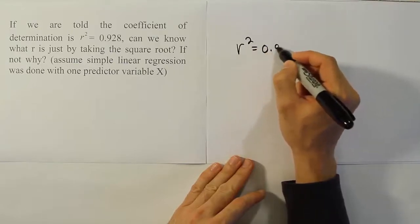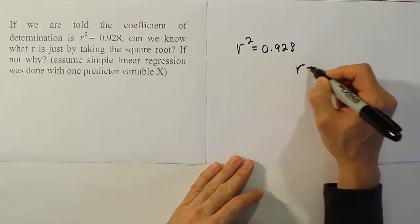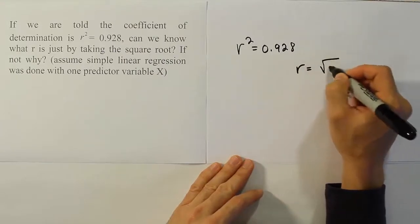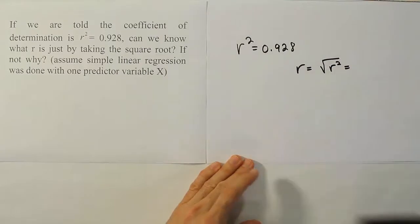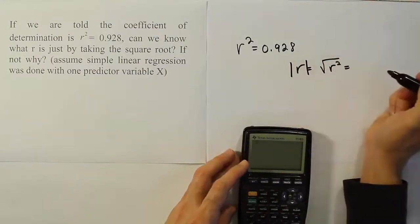So the more complicated answer is that the reason why we can't know it is even though if we have r squared, we can certainly take the square root of r squared and say that r is equal to the square root of r squared. We can do that, but the problem is that what we really find out here is the absolute value of r.